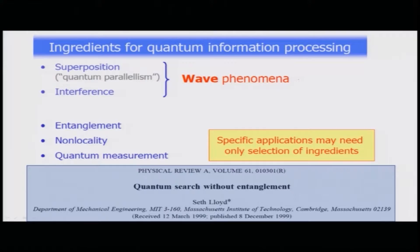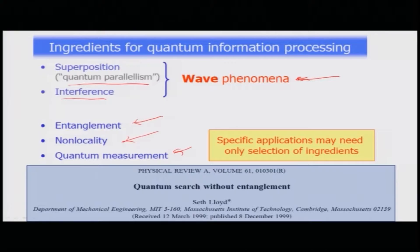The principle available in this case is superposition, which is a wave phenomenon — that is the quantum parallelism which exists in both cases — and it also has the interference phenomena, which are wave phenomena. However, entanglement, non-locality, and quantum measurements are specific aspects not present in wave phenomena. As was shown by Seth Lloyd in 1999, there are certain problems which can be done without using entanglement, and he had already shown that it was possible to perform quantum search without entanglement. This classical wave or Fourier optics approach to Grover's quantum search is therefore an interesting example.